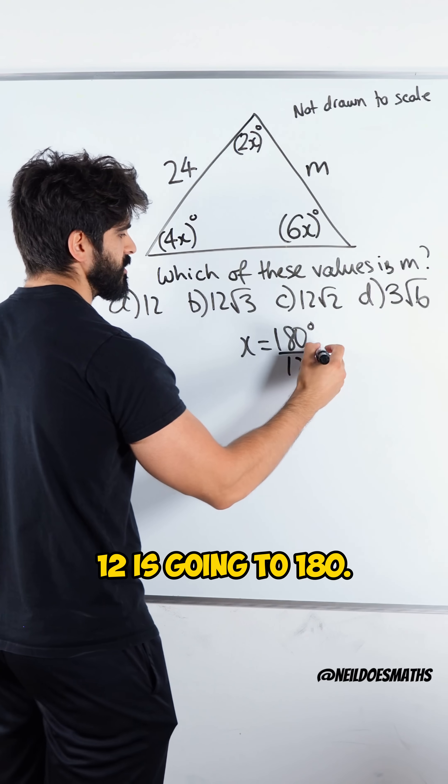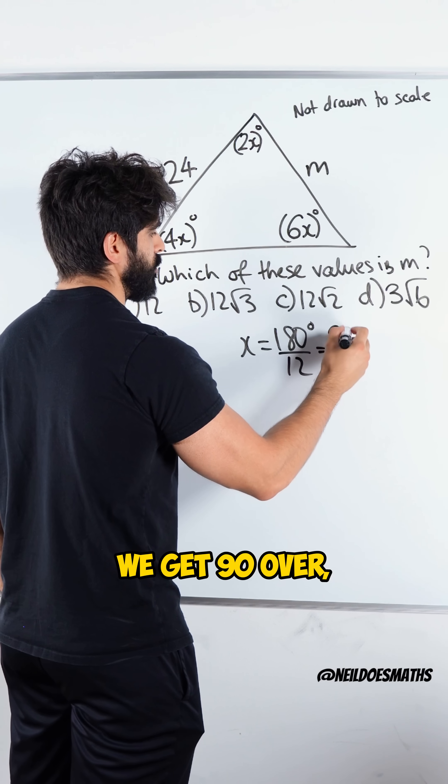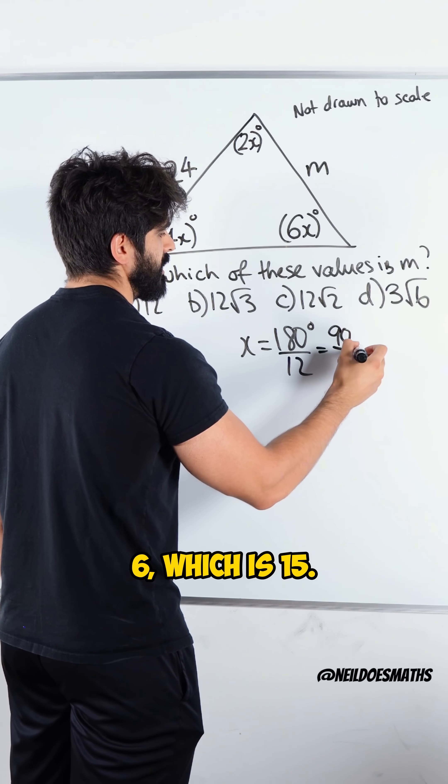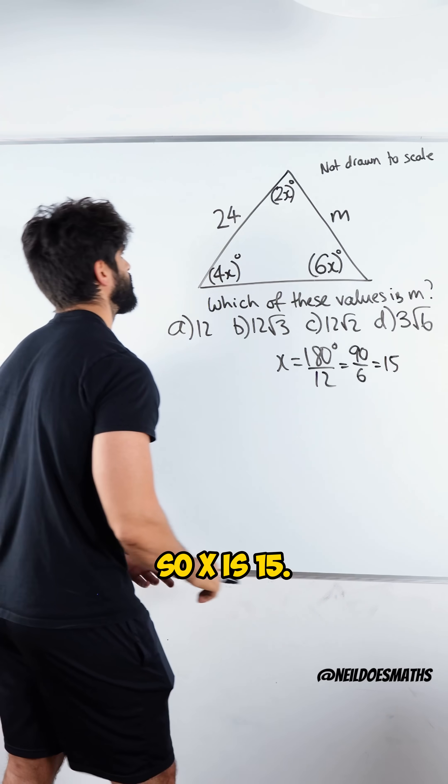So how many 12s go into 180? Let's divide top and bottom by 2. We get 90 over 6 which is 15. So x is 15.